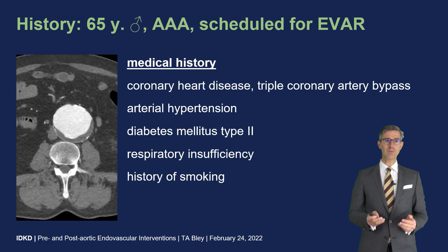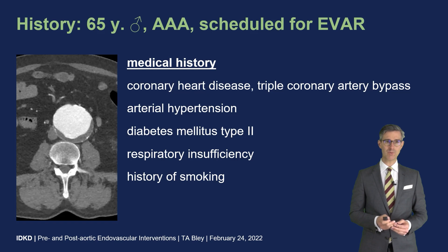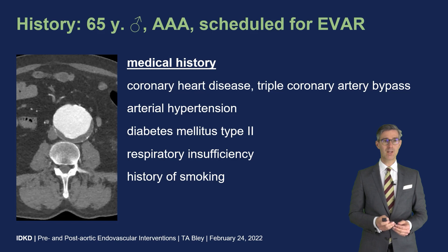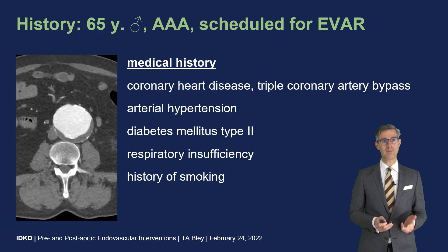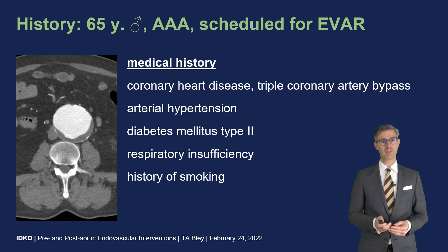Today I will discuss a case of a 65-year-old gentleman with abdominal aortic aneurysm who was scheduled for EVAR — Endovascular Aortic Repair. His medical history includes coronary heart disease, triple bypass surgery, arterial hypertension, diabetes type 2, respiratory insufficiency, and a history of smoking.